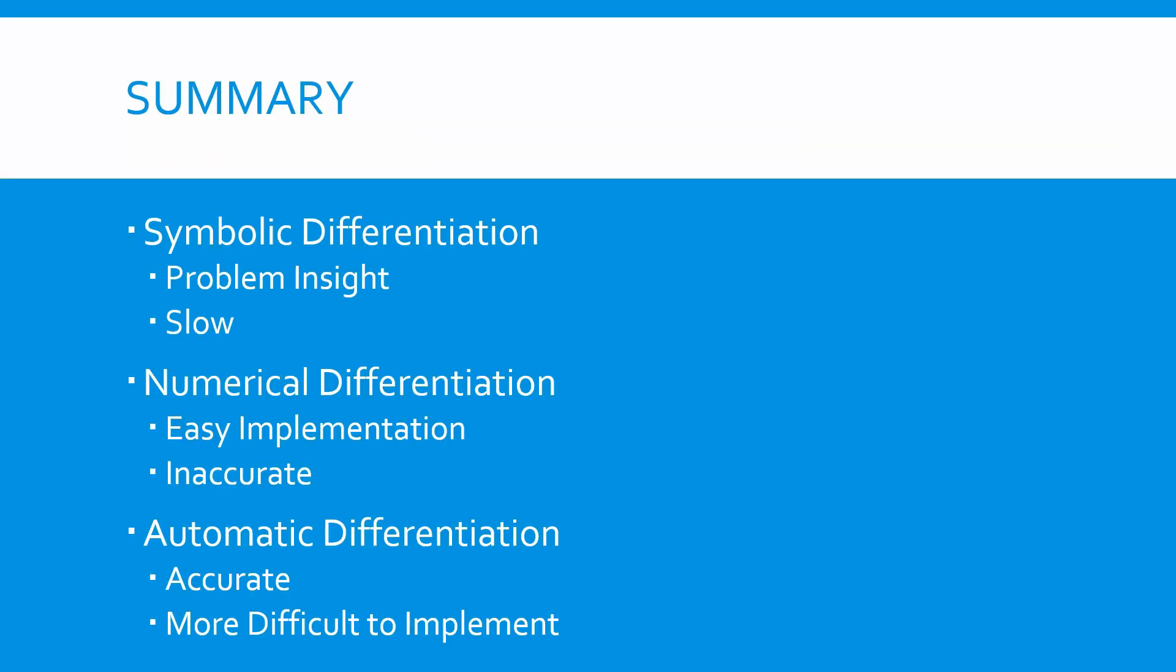To summarize, today we discussed three ways in which derivatives can be obtained for optimization. Symbolic differentiation is useful for gaining insight into a problem, but it is slow and inefficient. Numerical differentiation is easy to program but inaccurate. Automatic differentiation is fast and accurate but more difficult to code.